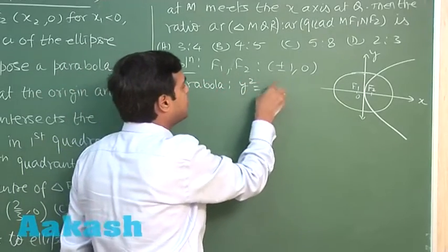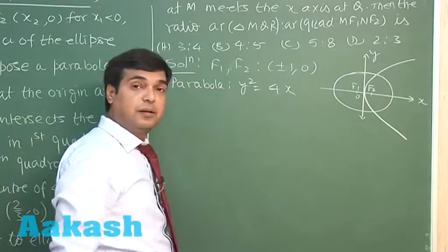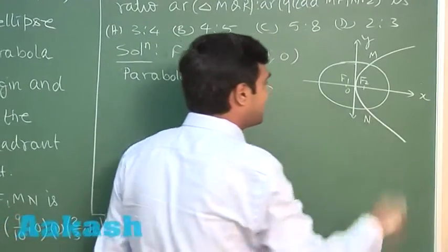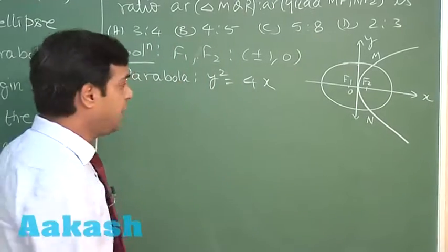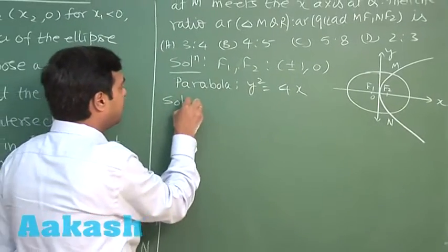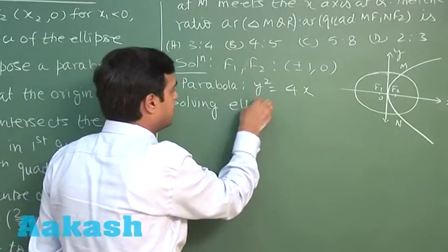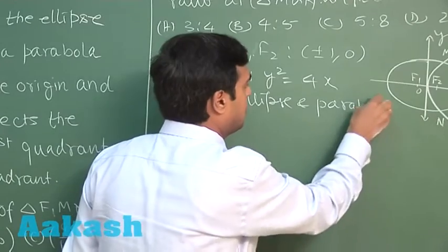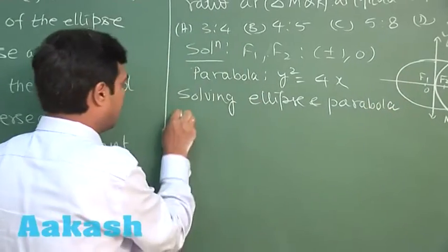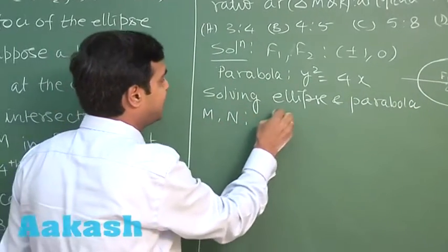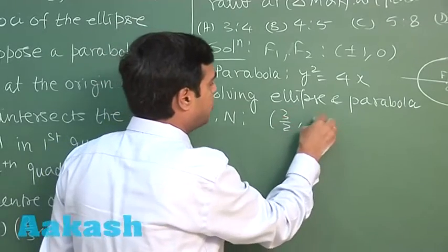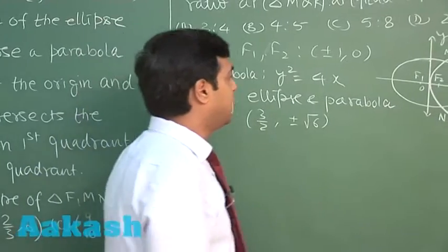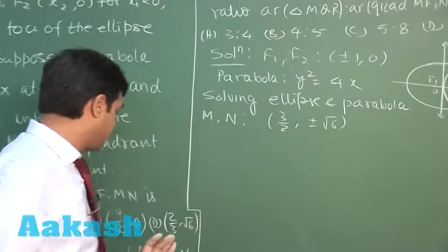It is y square equals 4x. When we have the equation of parabola, we can find the points of intersection M and N solving ellipse and parabola. We get M, N as 3 by 2 plus minus root 6. Right, we get these two points. Now let us talk about the two questions.